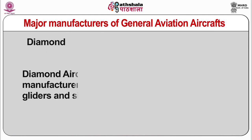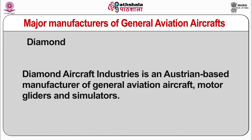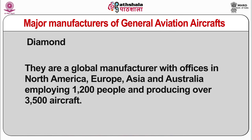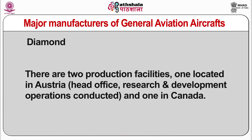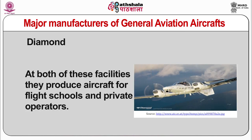Diamond Aircraft Industries is an Austrian-based manufacturer of general aviation aircraft, motor gliders, and simulators. They are a global manufacturer with offices in North America, Europe, Asia, and Australia, employing around 1,200 people and producing over 3,500 aircraft. There are two production facilities — one in Austria, which is the head office for Research and Development, and one in Canada — both producing aircraft for flight schools and private operators.